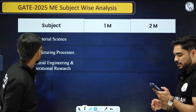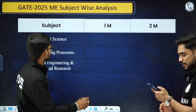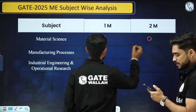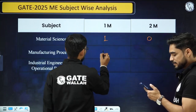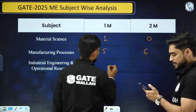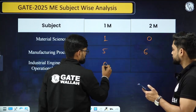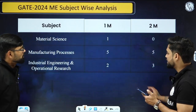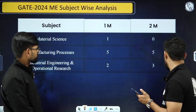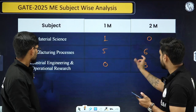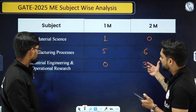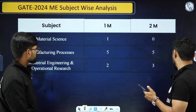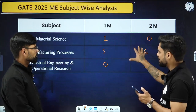Let's move on to production. Material science had one one-mark and zero two-mark questions. Manufacturing process had five one-mark and six two-mark questions. Industrial engineering had zero one-mark and three two-mark questions. Comparing with last year, industrial engineering weightage has been reduced, manufacturing process weightage is almost similar, and material science is almost the same — not much change here.